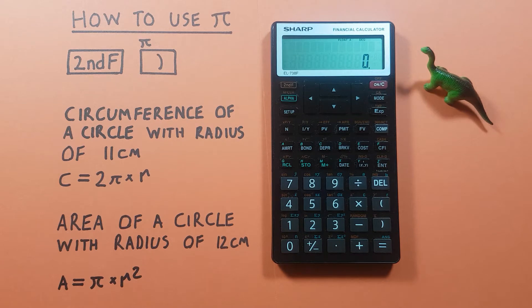PI is really helpful in calculating values associated with circles. For example, if we wanted to find the circumference of a circle with a radius of 11 centimeters, we could use this formula: C = 2πR, where C is circumference and R is the radius.